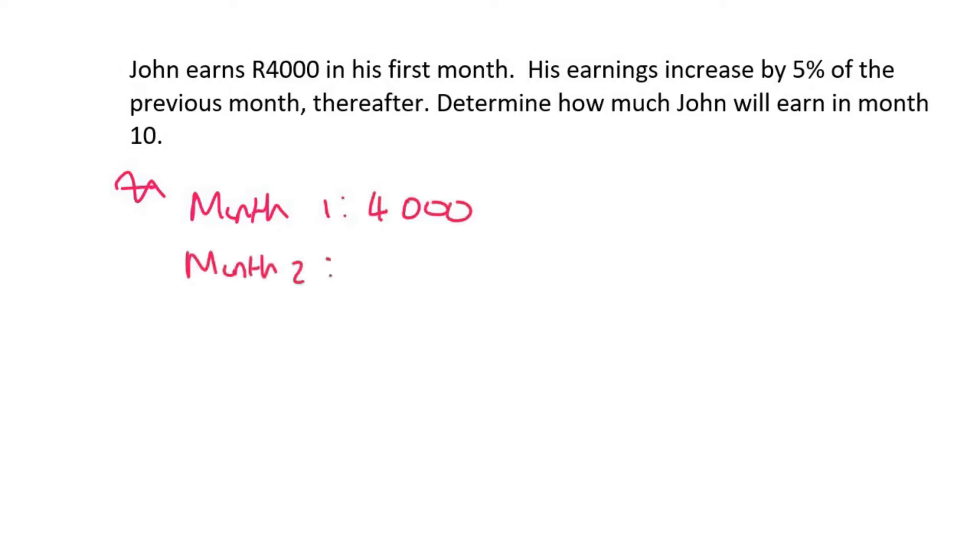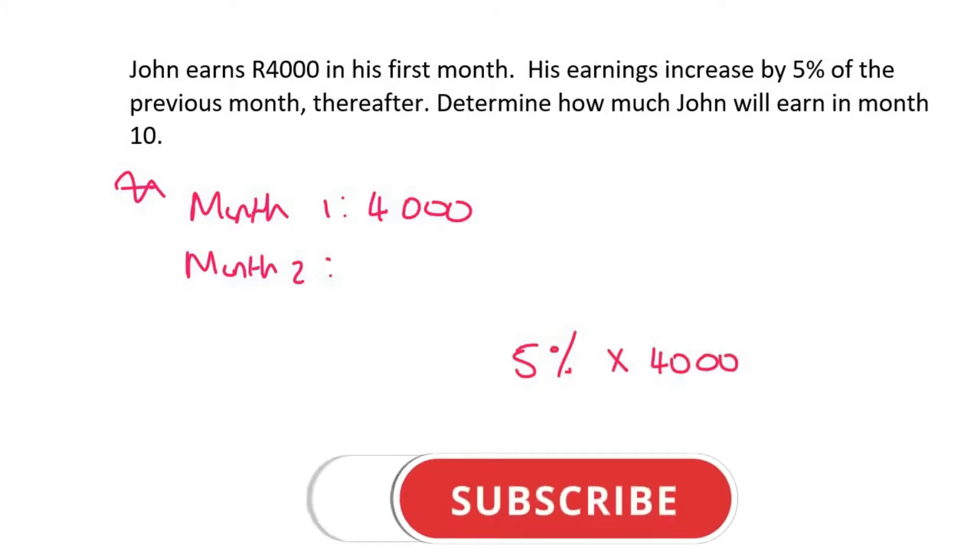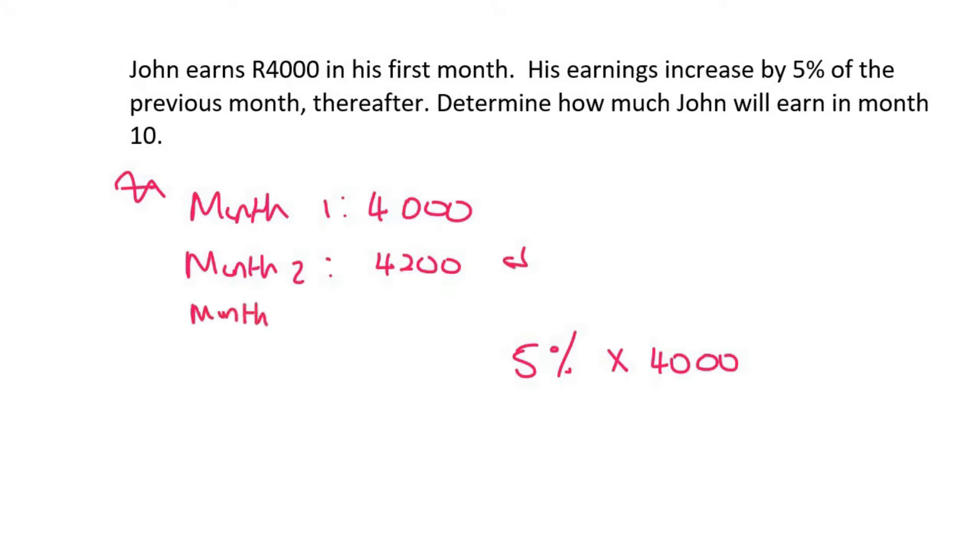There's different ways of doing this but you could work out 5% of 4,000 then add that on so then he earns 4,200. But now he's going to earn an extra 5% in month three of 4,200 and that's 210 Rand, so you add it on and he earns 4,410.